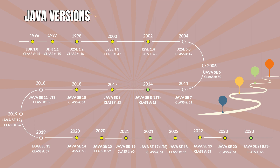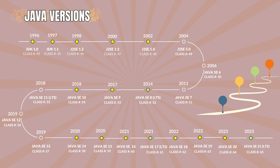Since Java version 9, it started releasing every 6 months. Long-term support LTS versions are designated every 3 years. These LTS releases receive extended support and updates, making them suitable for stable and long-term use in production environments.